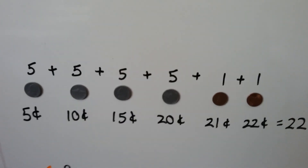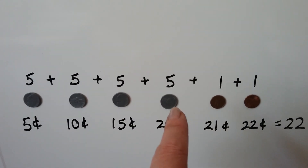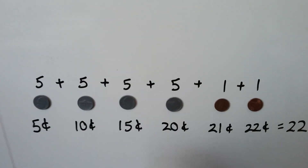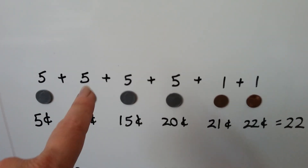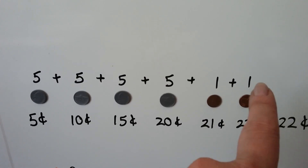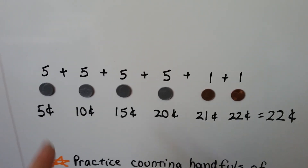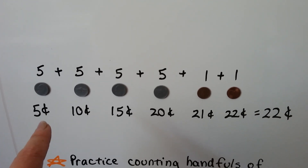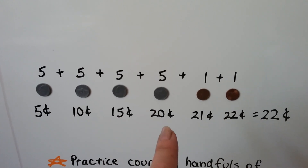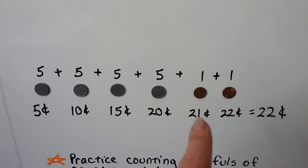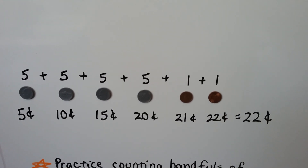Here we have six coins. We have four nickels and two pennies. That's five cents, five cents, five cents, and five cents, and one cent, and one cent. We can find the total by counting on — we start with the five and count by fives: five, ten, fifteen, twenty. Now we add one penny, so that's twenty-one cents. We add another penny — that's twenty-two cents.